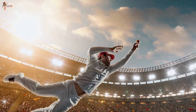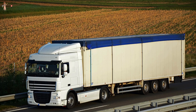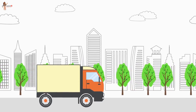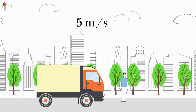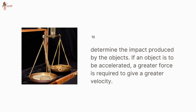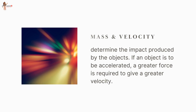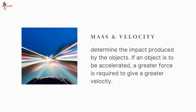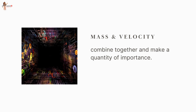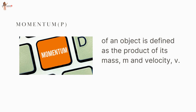Similarly, a truck at rest does not require any attention when parked along a roadside, but a moving truck even at speeds as low as 5 meters per second may kill a person in its path. A small mass such as a bullet may kill a person when fired from a gun. This suggests that the impact produced by objects depends on their mass and velocity. There appears to exist some quantity that combines the object's mass and velocity — one such property is called momentum.